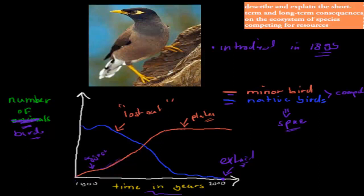This is a short-term battle. Short-term consequence is a decrease in numbers for the short-term consequence. But the long-term consequence could be extinction. That could be one example. So it could be numbers decreasing and then extinction.